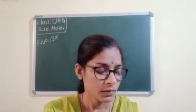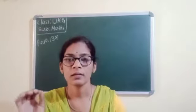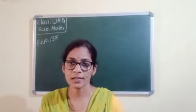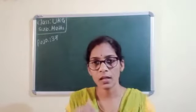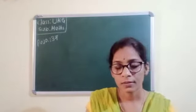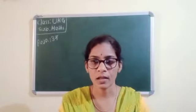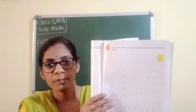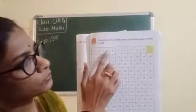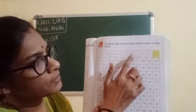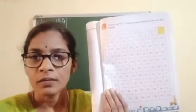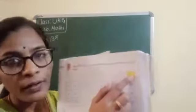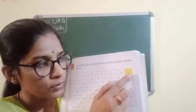I will tell you. Count the numbers first and then 10 skip. Color every 10th number. They will give here one example. Look here: 1, 2, 3, 4, 5, 6, 7, 8, 9, 10 — then 10 skipping. So we will color the 10th box.